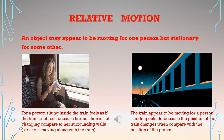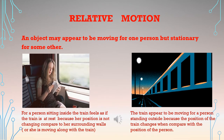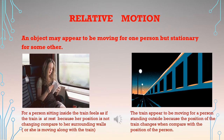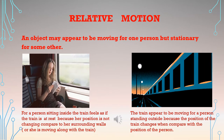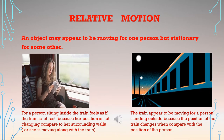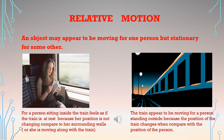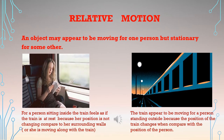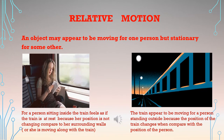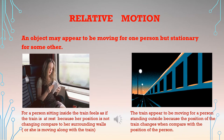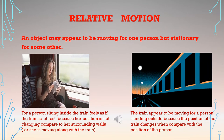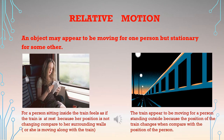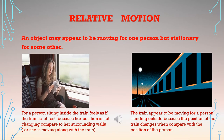Motion is relative. An object may appear to be moving for one person but the same object may appear to be stationary for another. For example, a person sitting inside a train feels the train is at rest because her position is not changing compared to the walls of the train. But for a person standing outside, the train appears to be moving because its position changes relative to them.